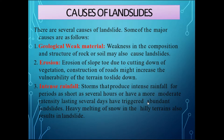The second cause is erosion of the slope toe due to cutting vegetation or construction of roads, which is very common in the rainy season. This increases the vulnerability of the terrain to downward movement. The third cause is intense rainfall — storms that produce intense rainfall, particularly in Jammu and Kashmir in the months of February, March, and April, or during the monsoon season in other parts of India, where very high rainfall in a short span of time increases the load of the soil, causing landslides.